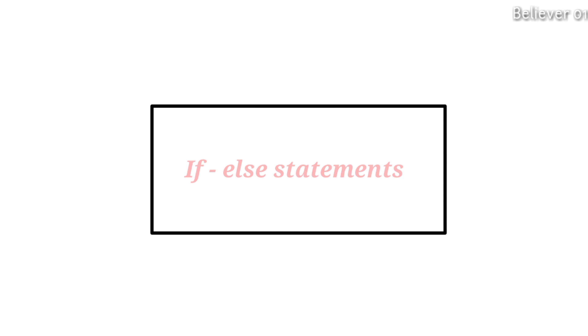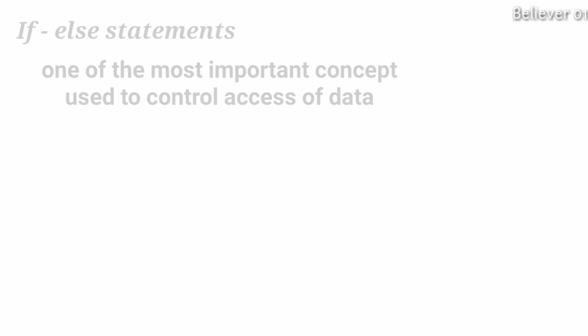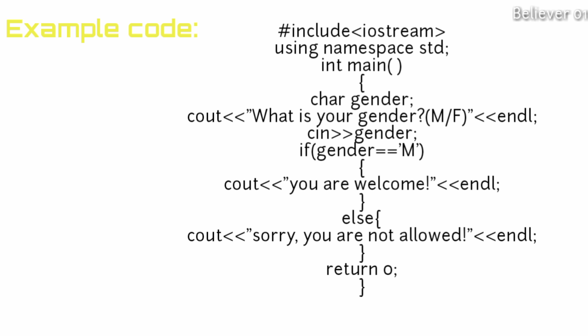If-else statements are one of the most important concepts in programming. We use if-else to control access of data. For example, if I have a website where only males can use it, then we can restrict females using if-else statements. The syntax is: 'if (condition) { ... } else { ... }'. If the condition is true, the if block executes; if the condition is false, the else block executes. For example, I have declared a 'char' variable called gender — if the user enters 'male' then print 'you are welcome'; if female, print 'you are not welcome'.